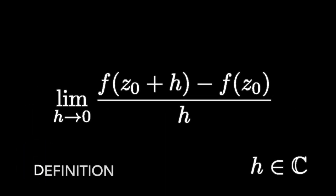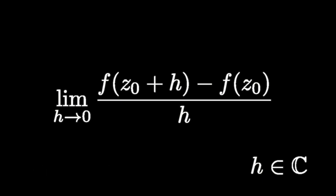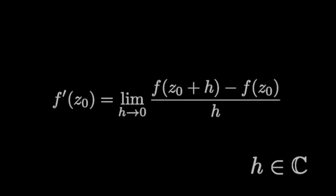We're ready to give the definition of a concept which plays a fundamental role in complex analysis. We say that the function f is complex analytic at the point z0 if the quotient shown here converges to a limit as h goes to 0. h is a complex number which is non-zero so that the quotient is well defined. The limit of the quotient, when it exists, is called the derivative of f at z0.